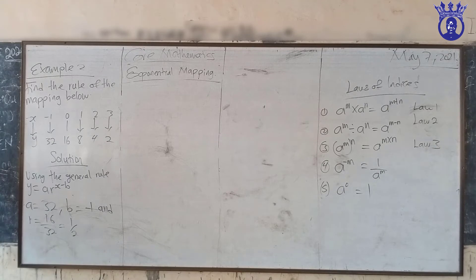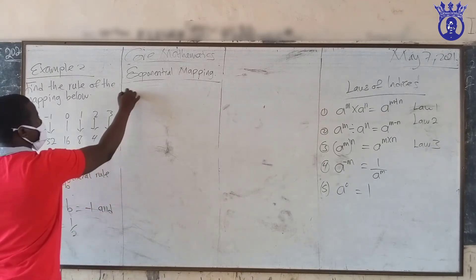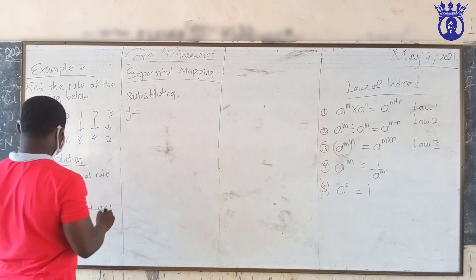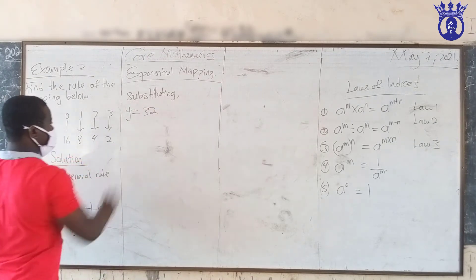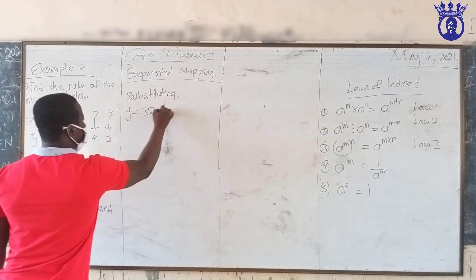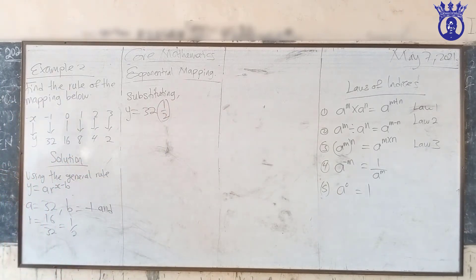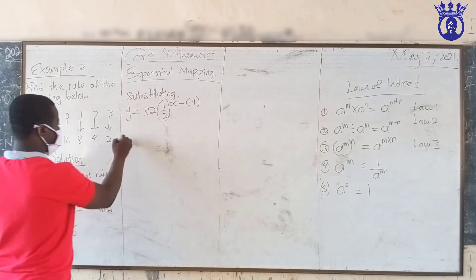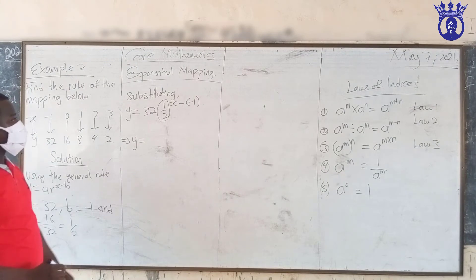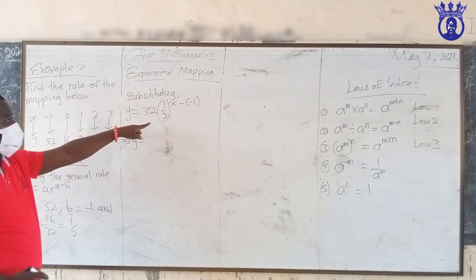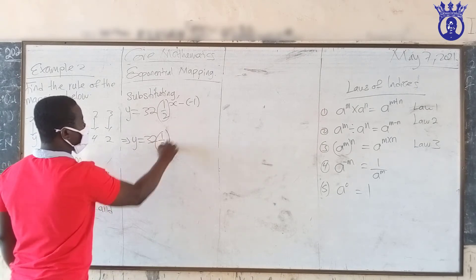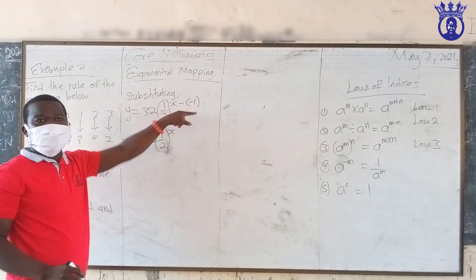Substituting into the general formula: Y equals 32 times one half raised to the power (x minus B). Since B is negative one, x minus (negative one) gives us x plus one. So Y equals 32 times one half raised to the power (x plus one).